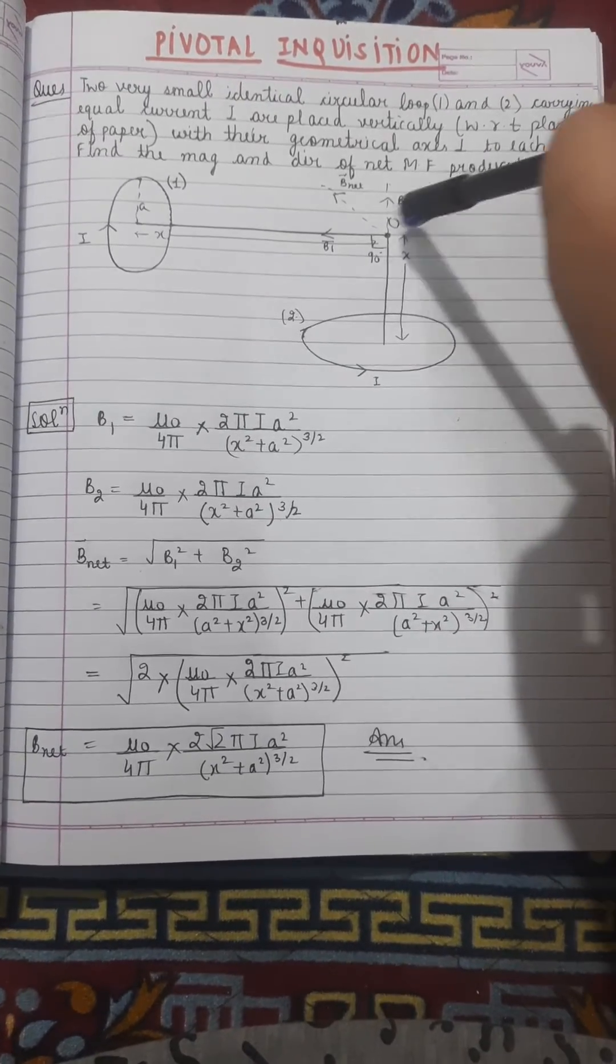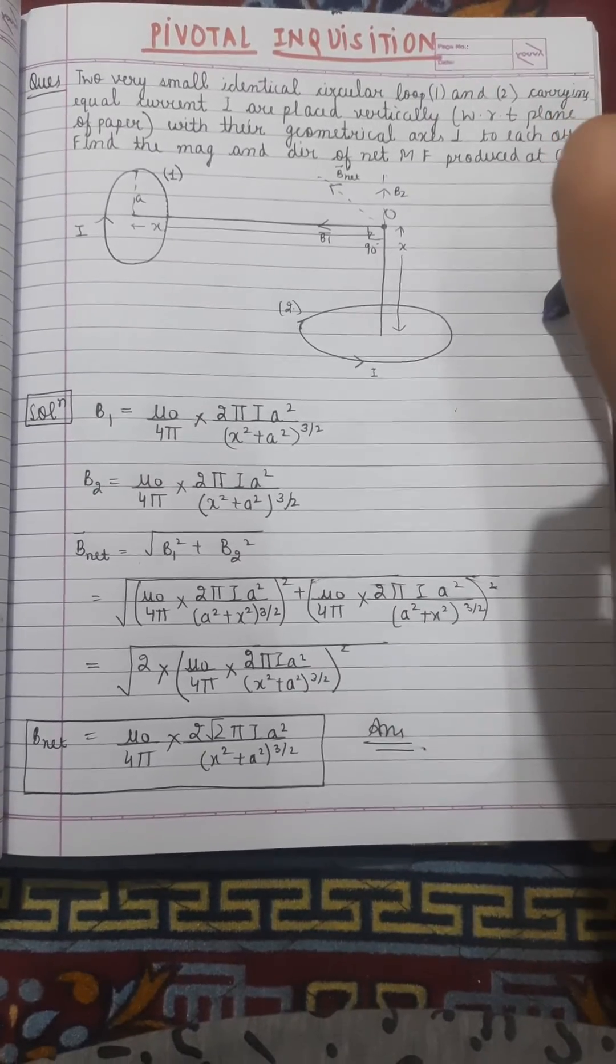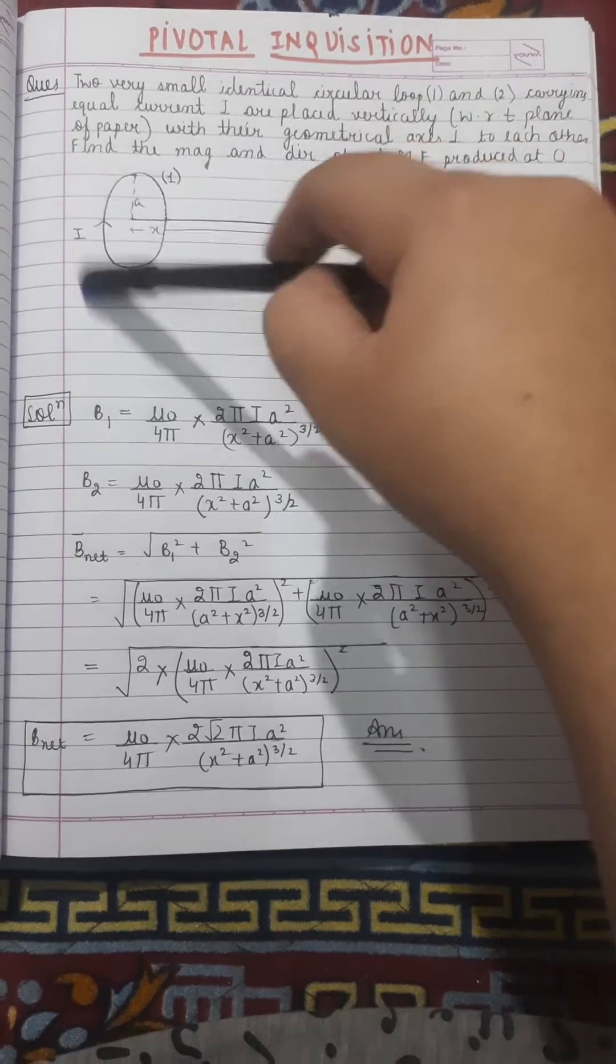What we need to find is the magnitude and the net magnetic field direction at point O. Since this point O is at the axial position of the loop, we are going to use the same formula.